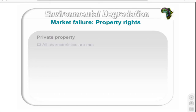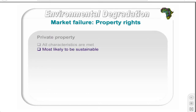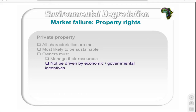Private property rights have all three characteristics and are the most likely to be sustainable. However, there are constraints: owners must be able to manage resources in terms of finance and appropriate knowledge, and must not be driven by perverse economic or government incentives. For example, a farmer driven by economic incentives is likely to plant marginal areas and use unsustainable methods to maximize personal gains in the short term.